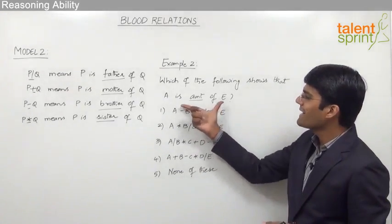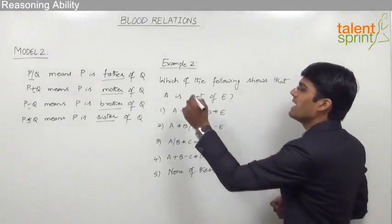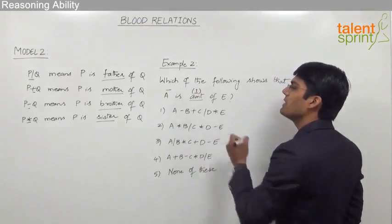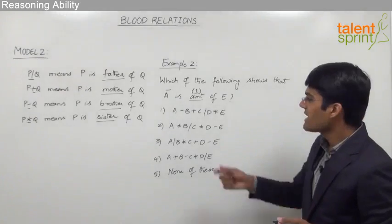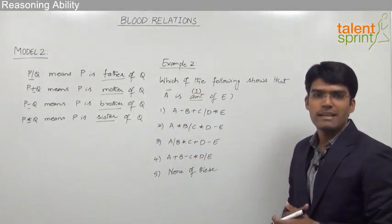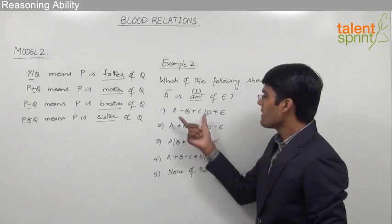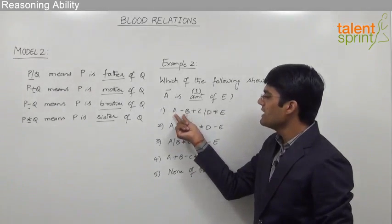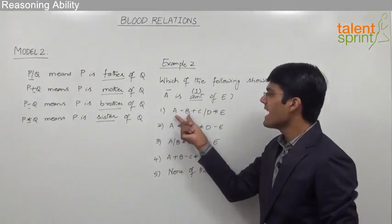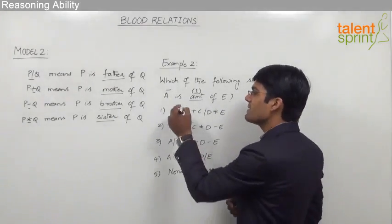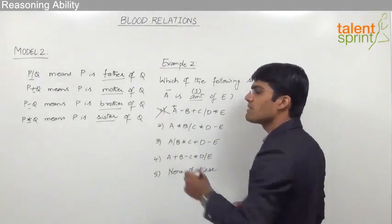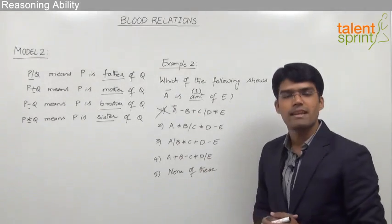Again, we can find the generation gap and gender for all given equations and see which satisfies the relationship. Since A is the aunt of E, A is clearly a female person, and the generation gap between A and E should be 1. For option 1, A minus B means A is the brother of B, making A a male person — so option 1 cannot be the answer since the required gender for A is female.